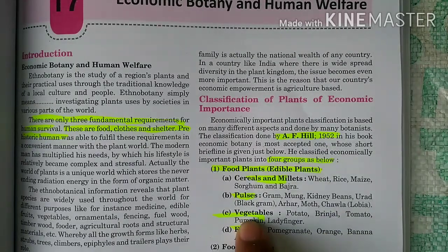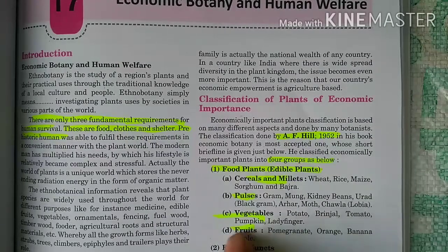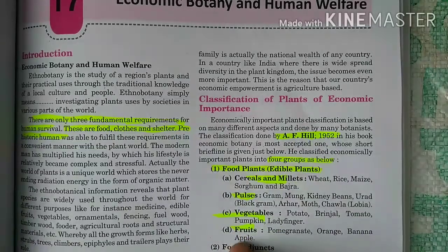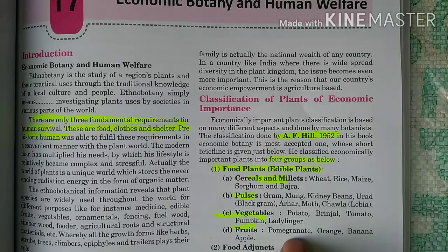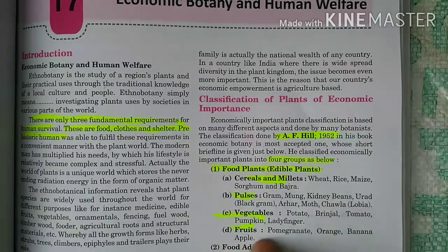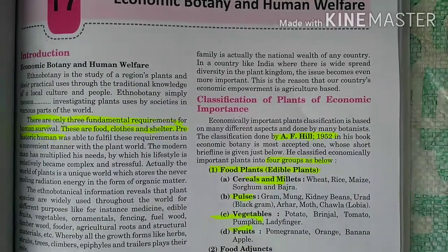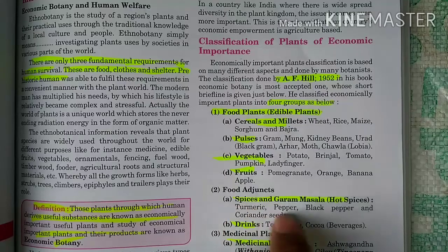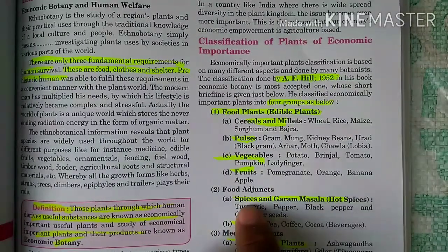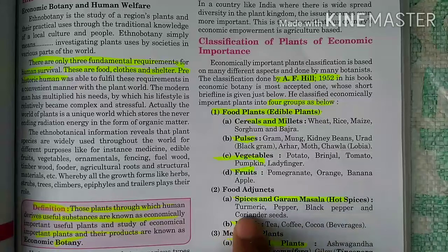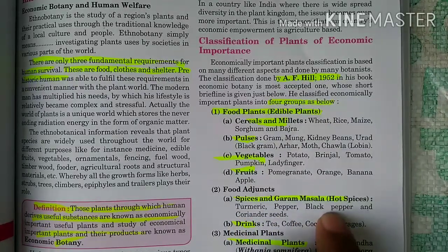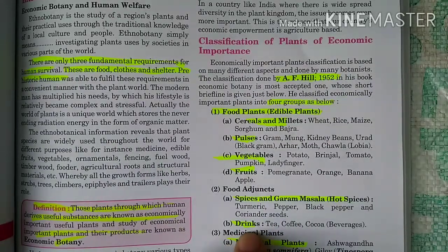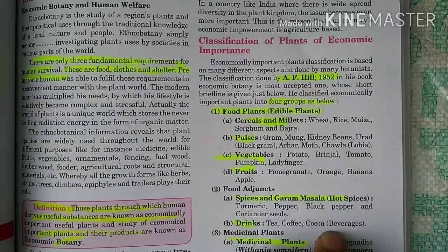Other food plant subcategories include vegetables such as potato, brinjal, tomato, and pumpkin; fruits such as orange, banana, and apple; spices such as turmeric, black pepper, and coriander seeds; and drinks such as tea, coffee, and cocoa.